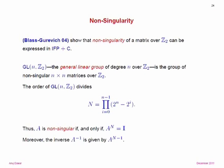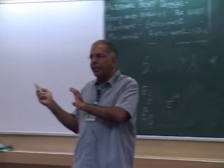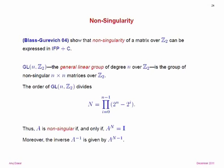What this allows us to do is, for instance, define whether a matrix is invertible. This follows from an observation in a paper by Blas and Gurevich, which shows non-singularity of a matrix over Z2 is expressible in fixed-point with counting. If you look at the general linear group of degree N over Z2 — the group of invertible N×N matrices under multiplication — you can calculate its order, and A raised to that order for any invertible matrix is the identity. Since that is just an exponential number you can calculate, you can produce a formula in the number domain as a binary representation, then use the exponentiation from the previous slide, giving you a test for whether a matrix is invertible.